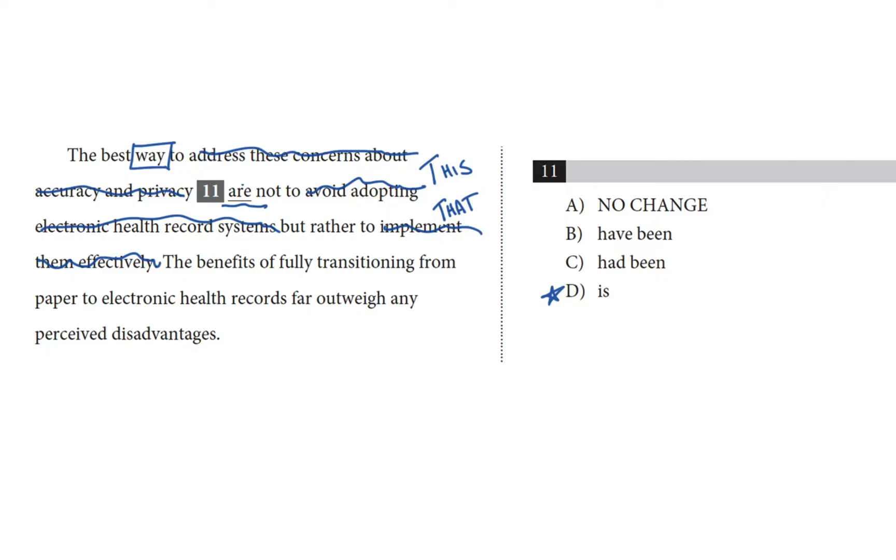But let's just cross out the plural options and then make sure. Because choice C, had been, could agree with a singular subject. They had been, she had been, we had been. Let's say goodbye to choice A, which is the word are, and choice B, have been. Because have been is plural in the way that are is plural. So that takes care of number agreement.